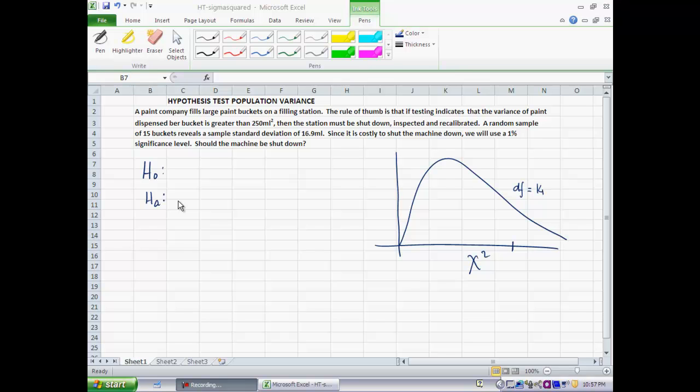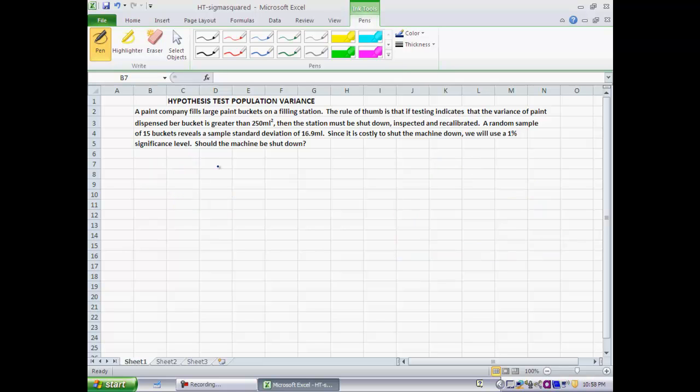So in this case, we want to check if the sample data indicates that the true variance is greater than 250 milliliters squared. So I would make that claim my alternate hypothesis. So I have σ² > 250, σ² being the population variance. So if I end up saying so, that should be the result of rejection of the null. That's why σ² > 250 has been set up as the alternate. Hence, the null hypothesis is σ² ≤ 250.